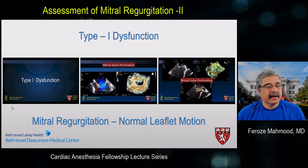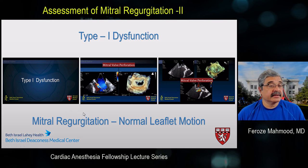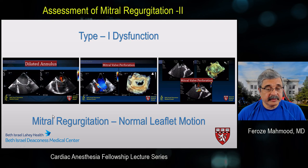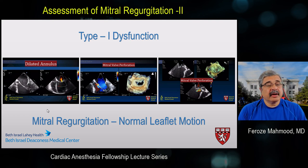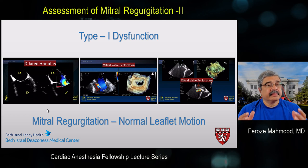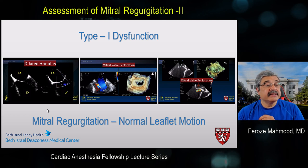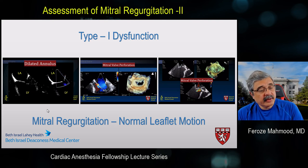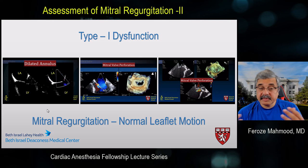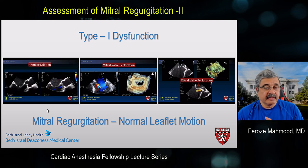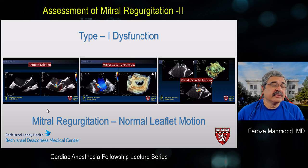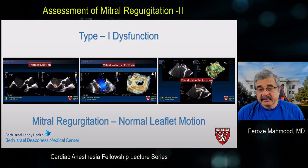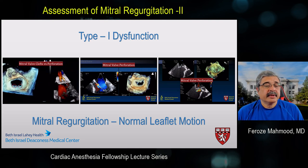Type 1 dysfunction occurs when the leaflet is regurgitant either because of annular dilation or leaflet perforation. Pure annular dilation is uncommon, occurring in dilated cardiomyopathy or chronic atrial fibrillation. When there is significant annular dilation, it leads to malcoaptation of the leaflets despite normal movement and no structural abnormalities. Most of the time, annular dilation is also associated with some leaflet restriction secondary to LV dilation and splaying of the papillary muscles and chordae tendineae.